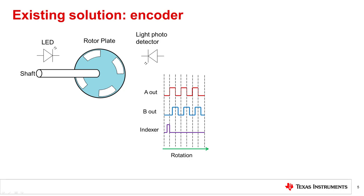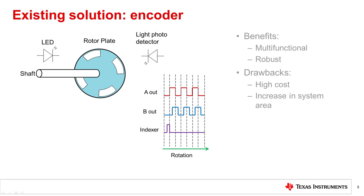Under normal driving conditions, the number of encoder outputs per step signal should remain constant. However, if the encoder counts per step are less than the expected counts, the motor might be experiencing a stall event. While an encoder can monitor position and detect stall, it adds an extra component to the system, which can increase the overall system cost and size.